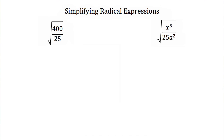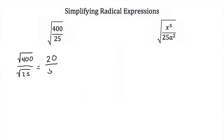Let's try practicing the quotient property. Here we have the square root of 400 divided by 25. By using the quotient property, I can write this as the square root of 400 divided by the square root of 25. The square root of 400 is 20, and the square root of 25 is 5. 20 divided by 5 is 4, so the square root of 400 over 25 is just 4.